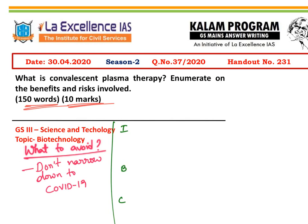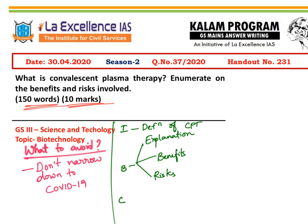In terms of answer structure — introduction, body, and conclusion — the introduction should contain a simple definition of convalescent plasma therapy. The body can be divided into three subparts: first, an explanation of how CPT works; second, the benefits associated with it; and third, the risks involved. The benefits and risks are discussed in newspapers daily, so review them. In the conclusion, you can write about its status as a proposed treatment modality for COVID-19 in India and how it can prove to be efficient, or simply summarize what you have written.